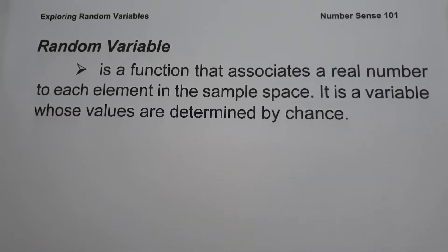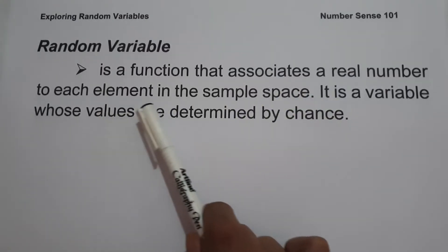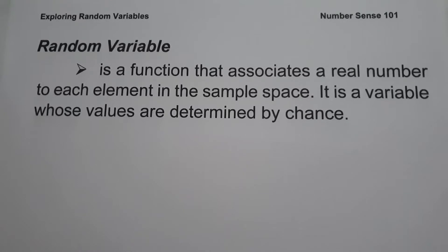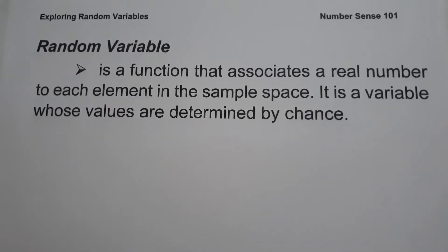For today's video, we are going to talk about what is a random variable, and we are going to explain everything in detail. A random variable is a function that associates a real number to each element in the sample space. It is a variable whose values are determined by chance — a way to map outcomes of a statistical experiment into a number. It is denoted by capital letters X, Y, Z, or any letter in the alphabet.